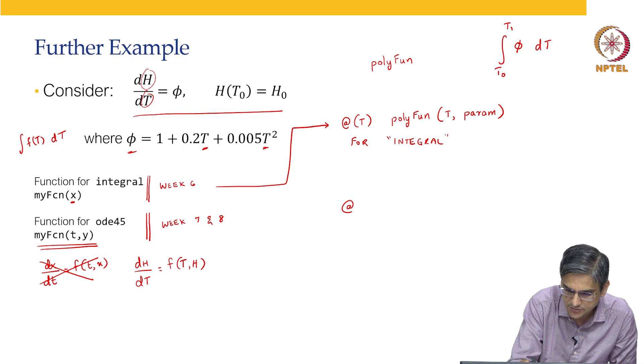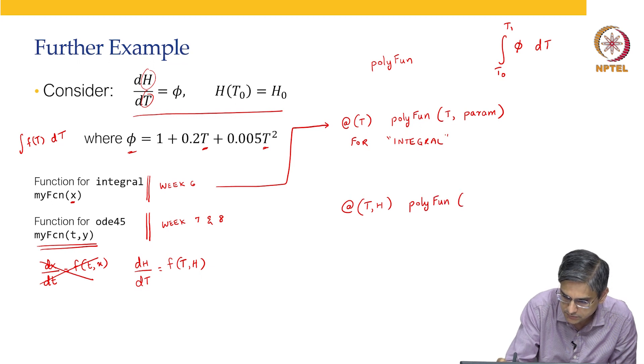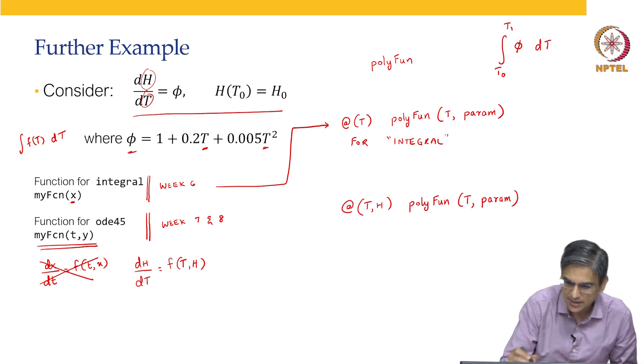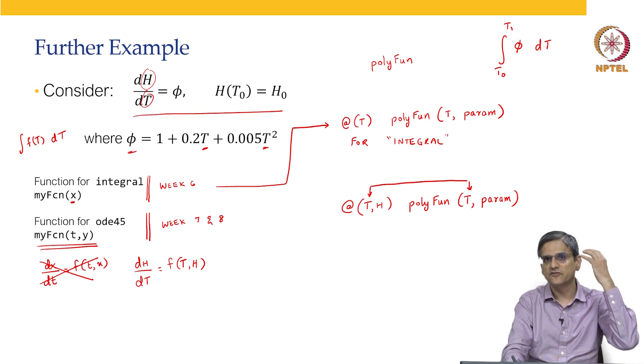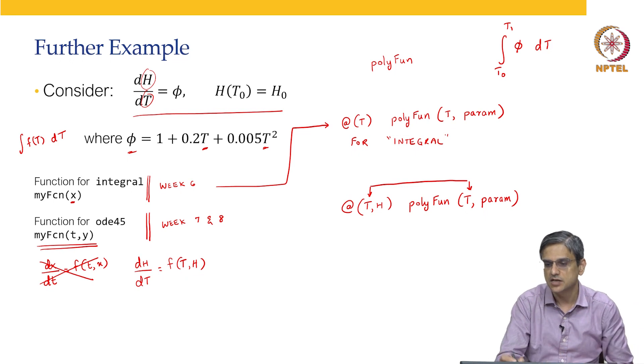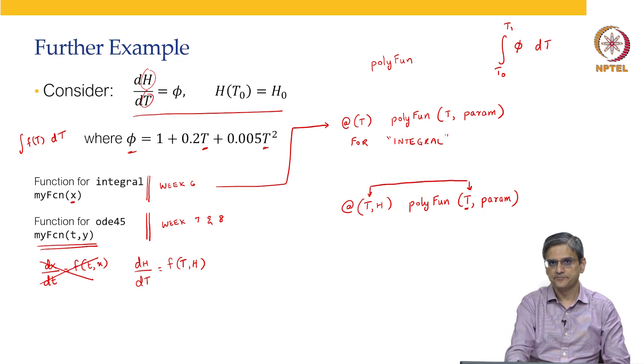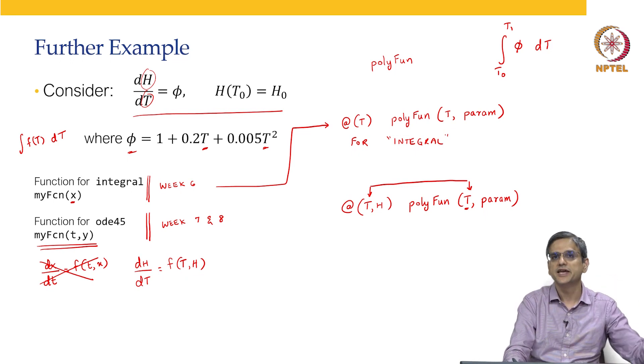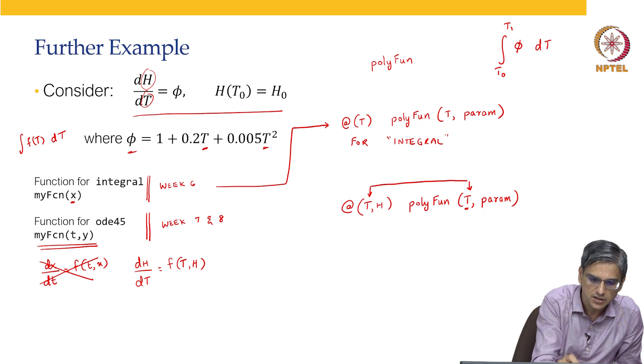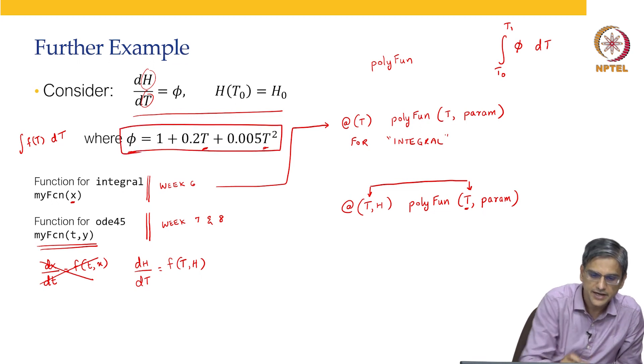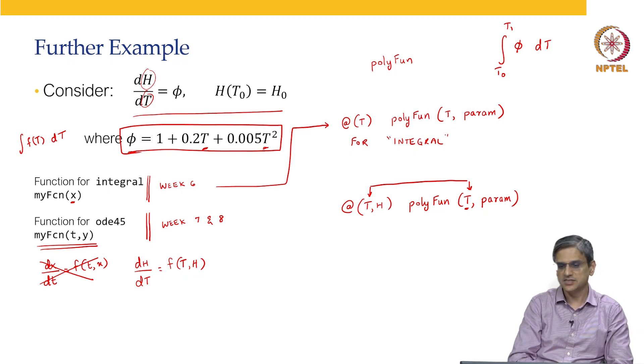Now, how we are going to write this: we are going to write this as at t comma h. Now, what does MATLAB do? MATLAB recognizes this particular linkage. It says that the first variable of your ODE solver is nothing but the temperature. The second variable of the ODE solver is ignored. H is completely ignored by MATLAB. Why it is ignored? Because in the definition of phi, H does not exist. As a result, H is currently totally ignored by MATLAB.